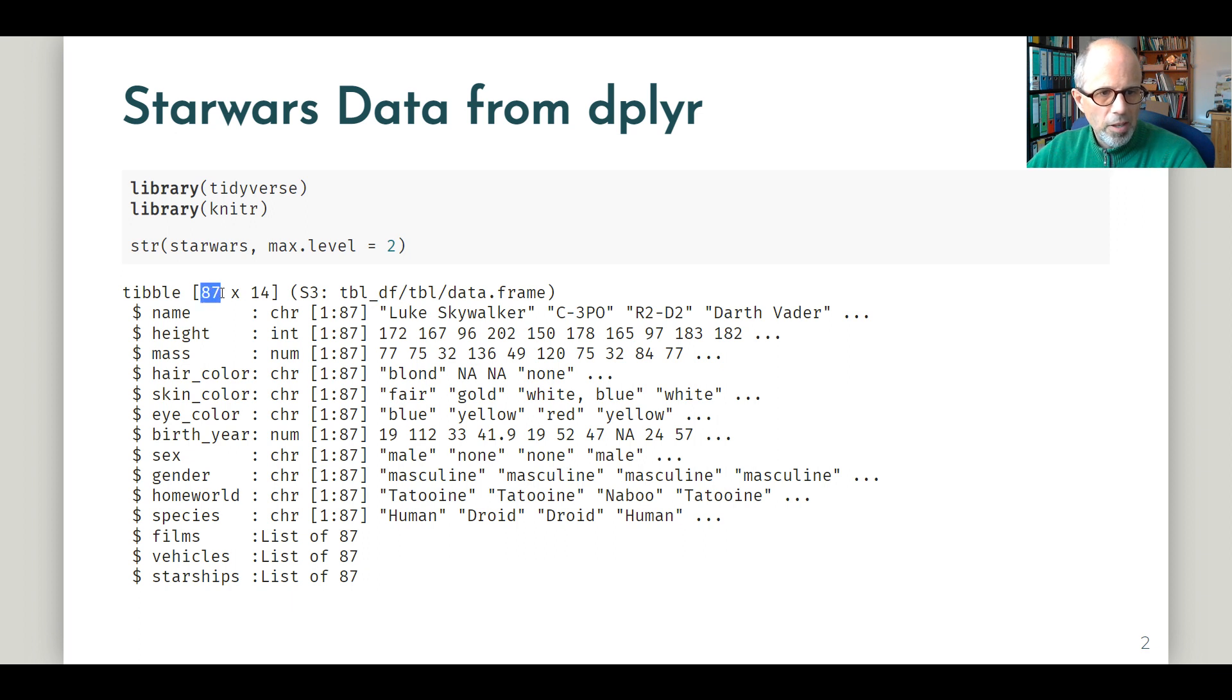We'll have a look at the dataset and you see it contains 87 characters from the Star Wars movies, like names and a lot of characteristics of the figures there and the species. It's a bit unusual because the last three variables are actually lists, because each character can appear in several films, can have several vehicles, and so on.